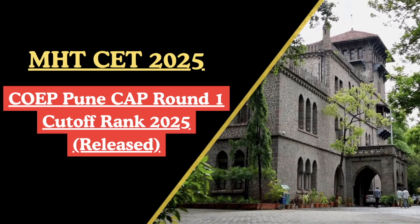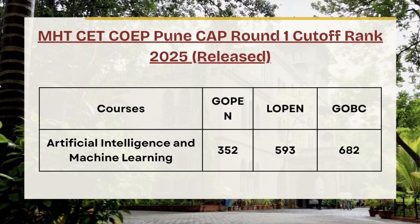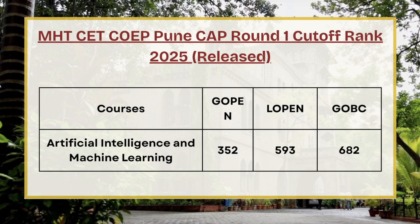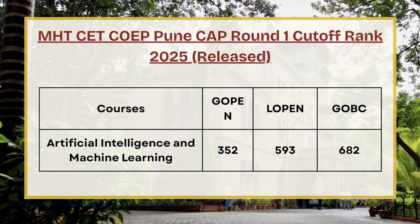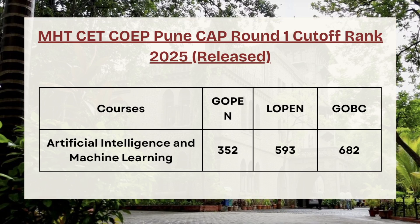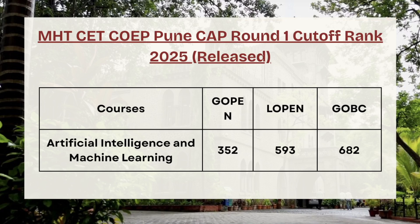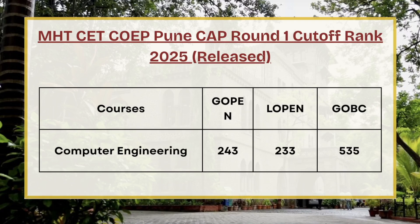First in the list we have Artificial Intelligence and Machine Learning. As you can see on the screen, for G-Open the cutoff rank is 352, for L-Open the cutoff rank is 593, and for GOVC the cutoff rank is 682.